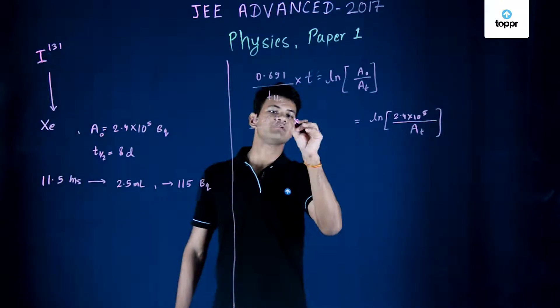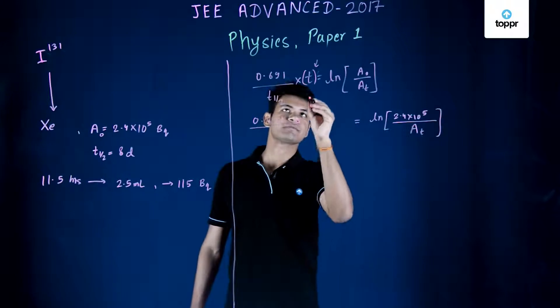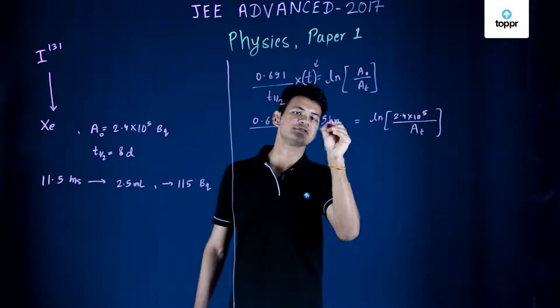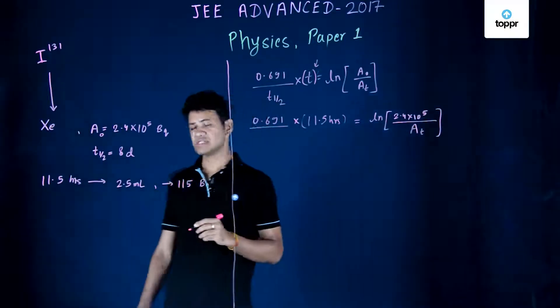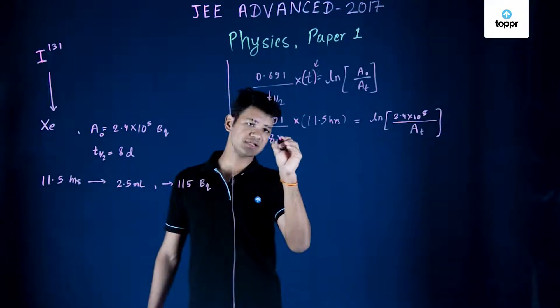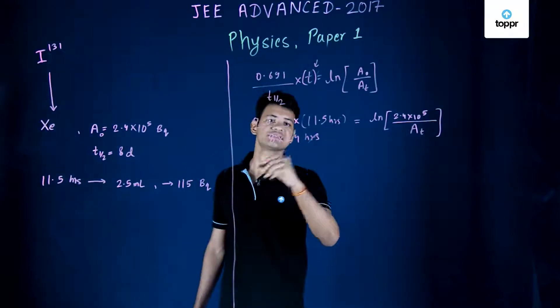So we will put in 11.5 hours and we know that t_half of xenon is 8 days. 8 days is basically 8 × 24 hours, hours get cancelled.